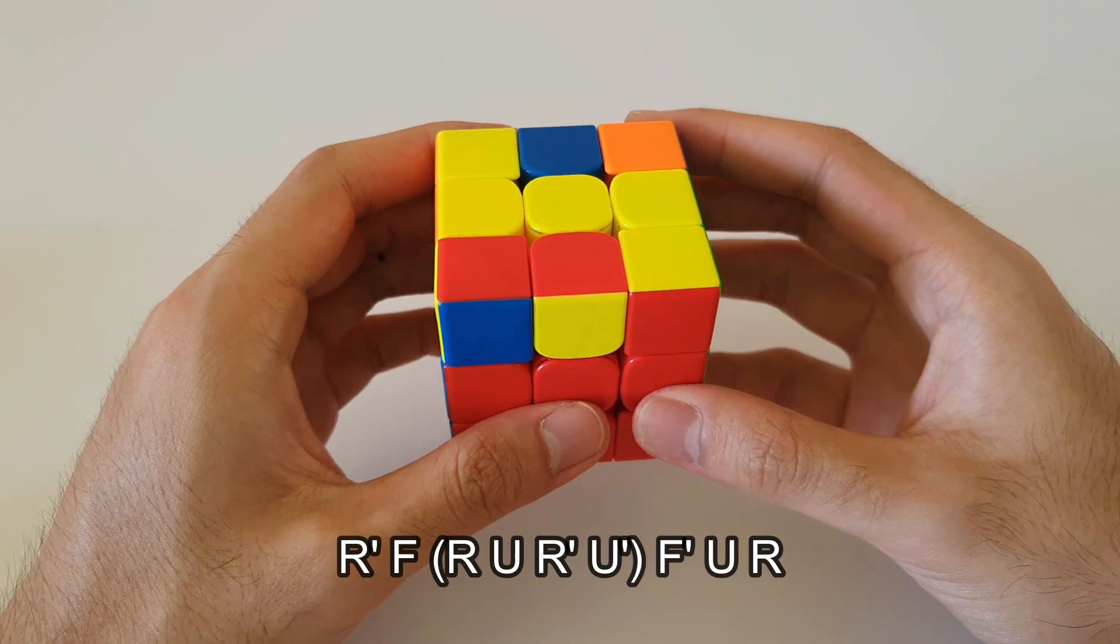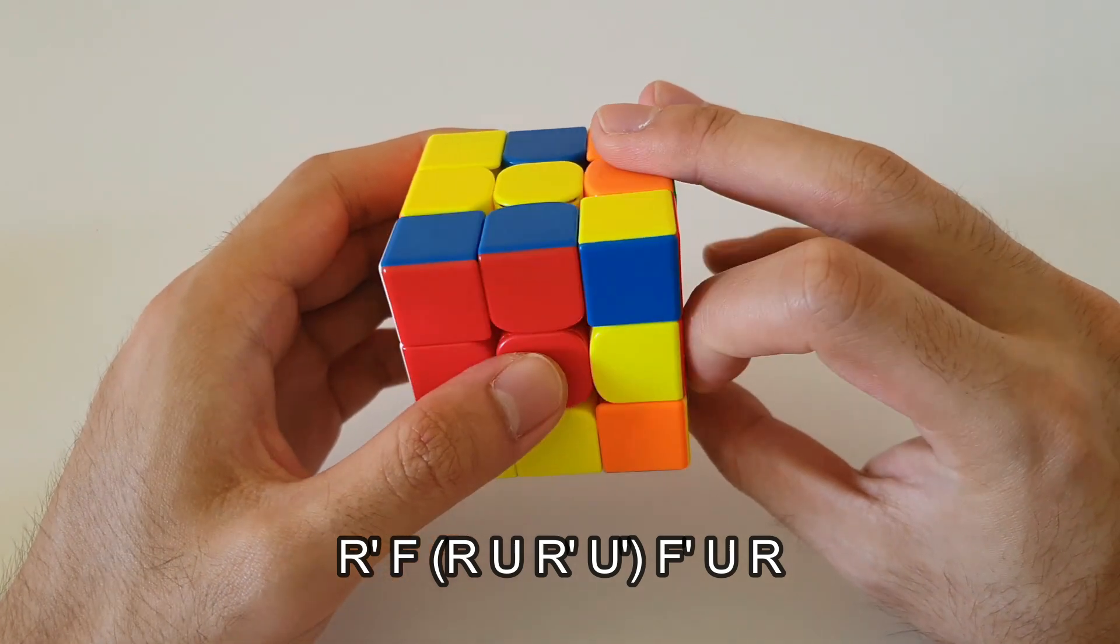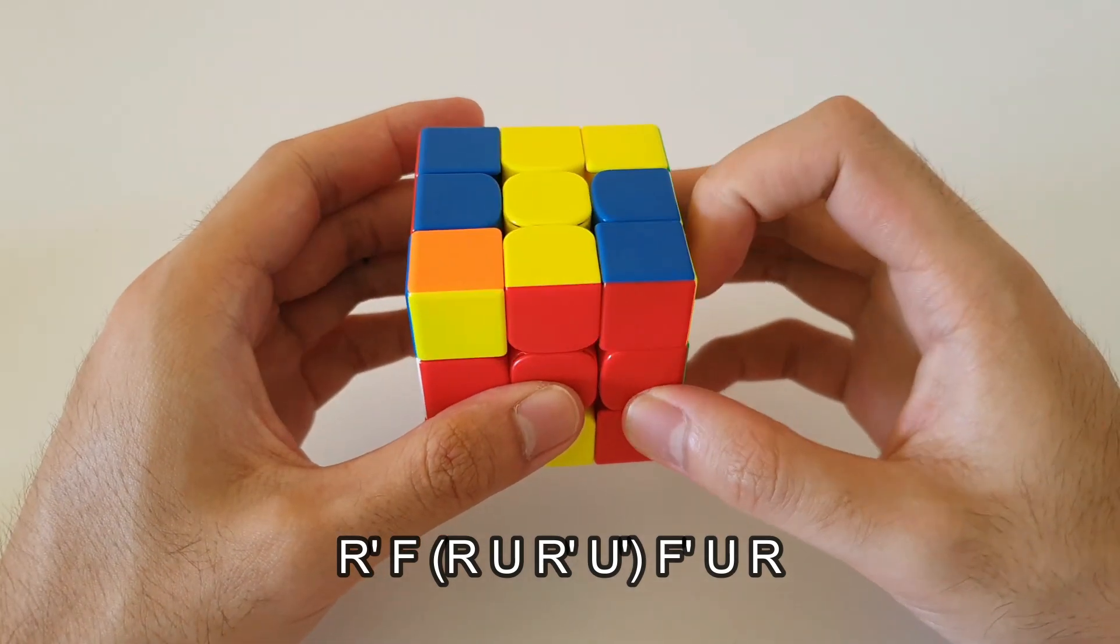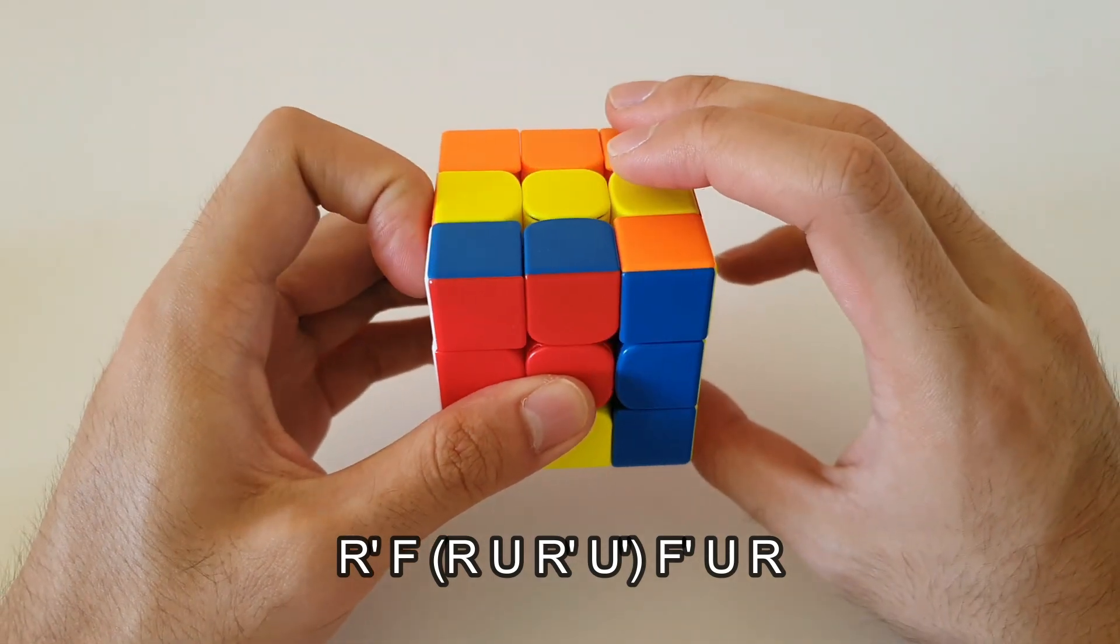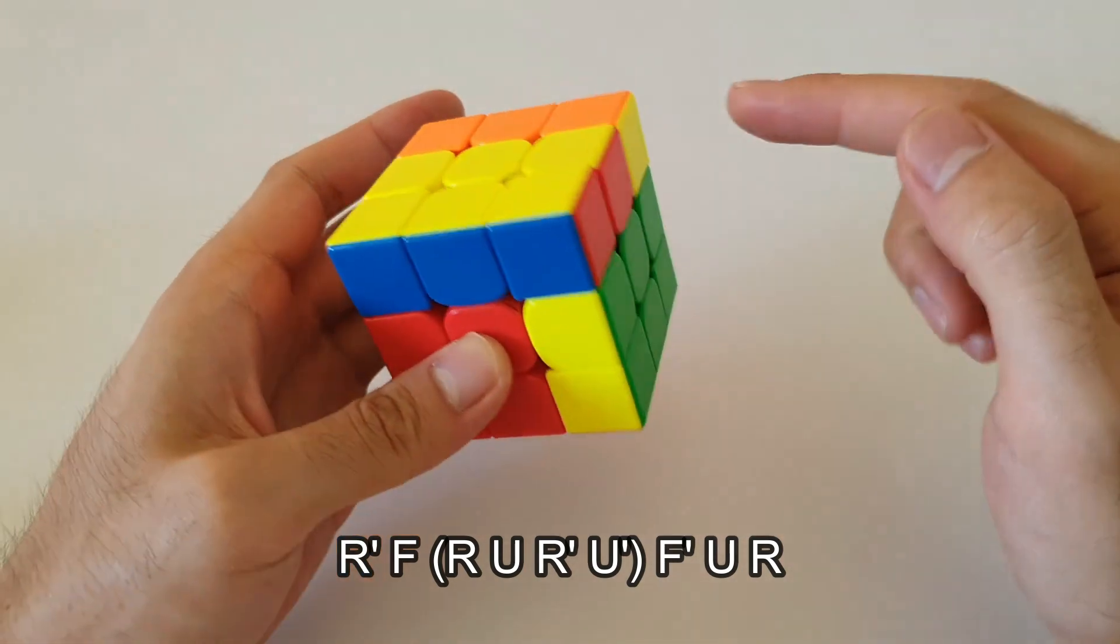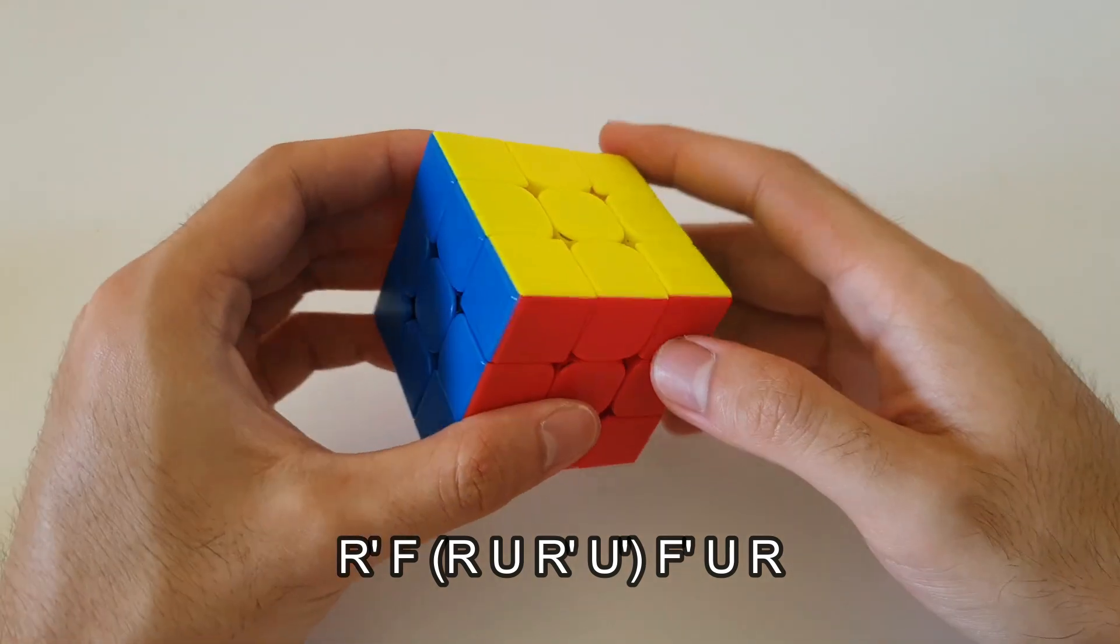It starts off with an R' followed by an F, so you can use your index finger for the F. Now you do the sexy move which is R, U, R', U'. And now you finish off the algorithm with an F' matching up the yellow colors. You do a U to match up these colors and then R to finish off.